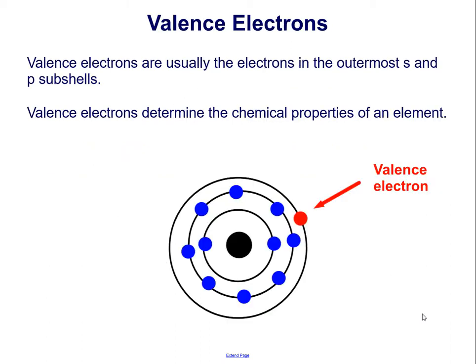Valence electrons are usually the electrons in the outermost s and p subshells. Valence electrons determine the chemical properties of an element. Shown here in red is the valence electron of this atom.